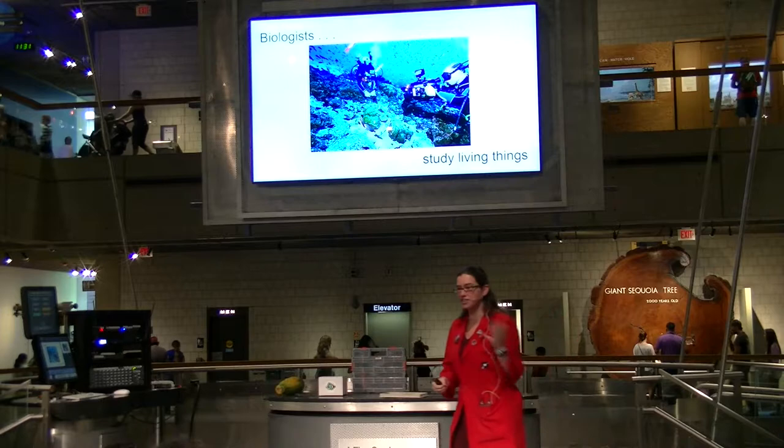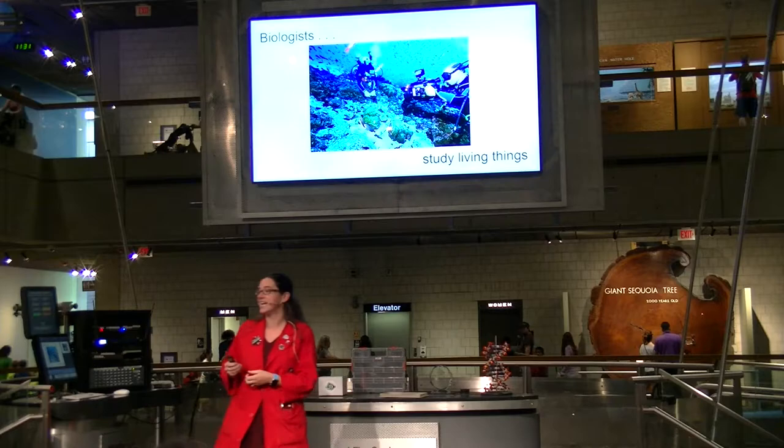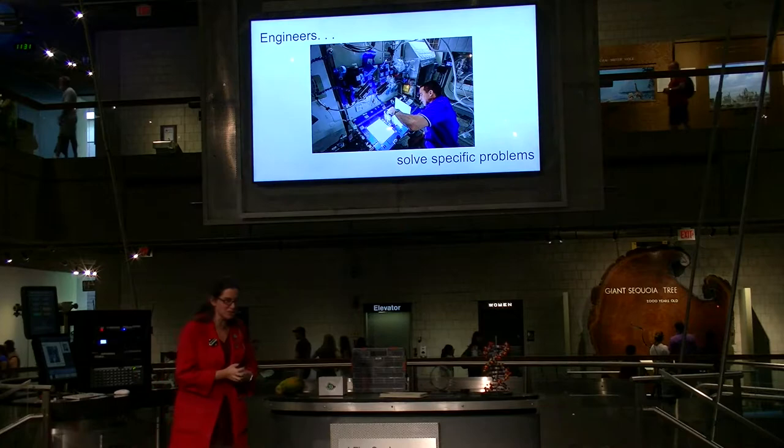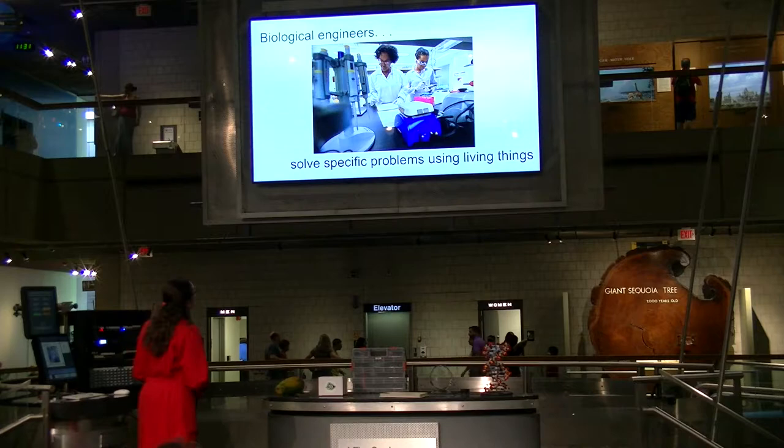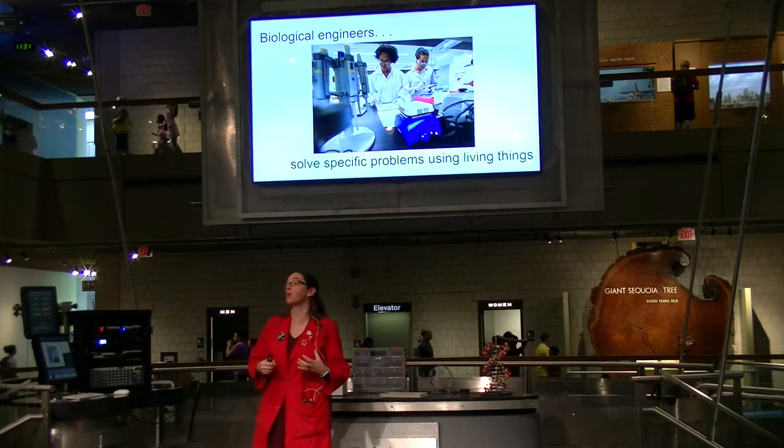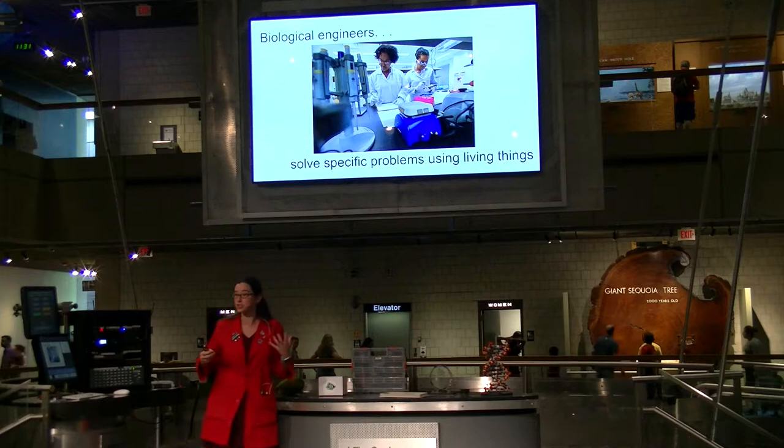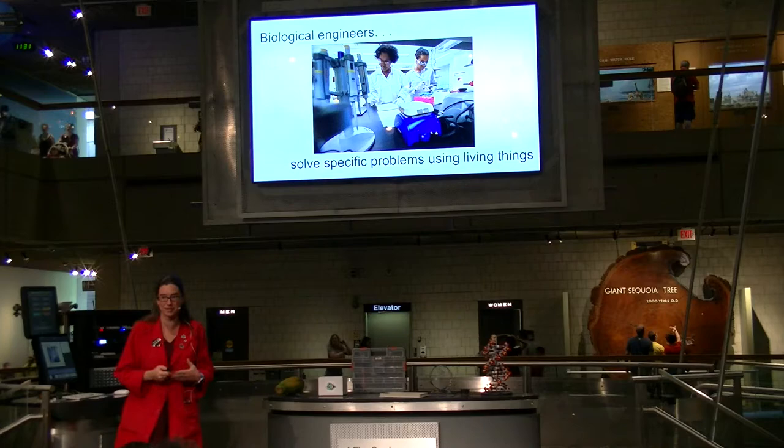Biologists are scientists that study living things — it might not be a surprise to you. Engineers solve specific problems. But if you put the two together, you actually get a biological engineer who's solving specific problems by using living organisms. A lot of times you think of an engineer as using a toolbox and tools. Biological engineers use a toolbox that's actually filled with biological things.